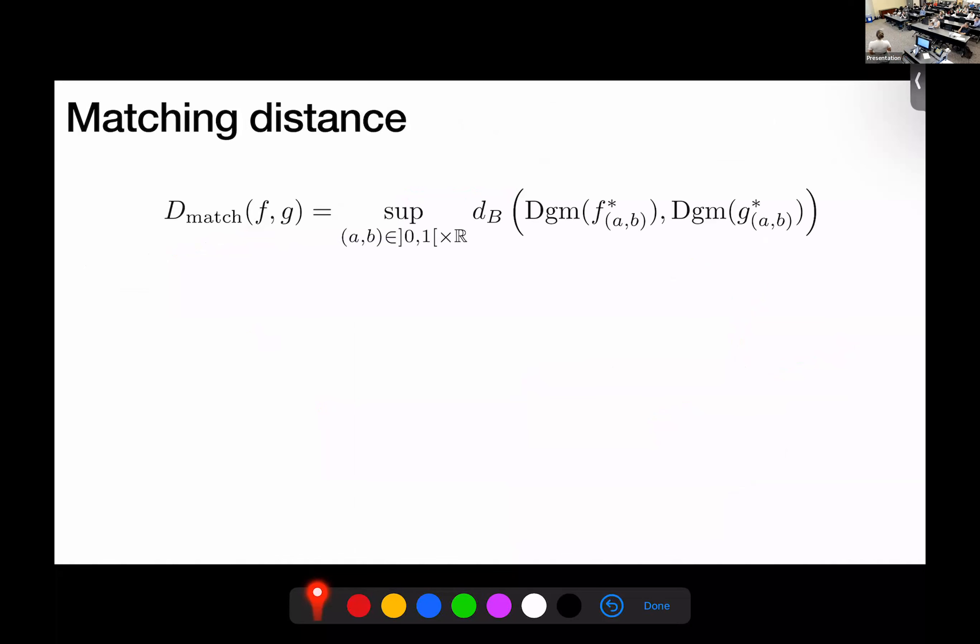So the matching distance between two filtering functions, F and G, or between actually their ranking variant, depending on how you want to see, is going to be the supremum over all the parameter values in the strip that we've seen before of the bottleneck distance between the persistence diagram of the functions at the parameter values AB.